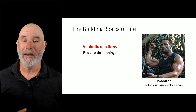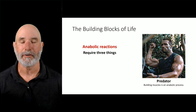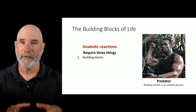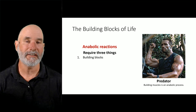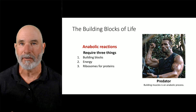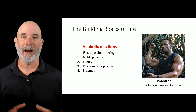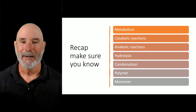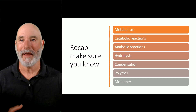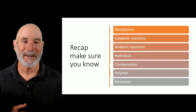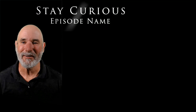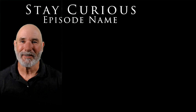You may have heard of anabolic steroids, because they help build lots of muscle. To build muscle, you need amino acids as building blocks and you also need energy. If you're going to make proteins, you make them inside a ribosome, and to build other types of molecules, you need enzymes to help facilitate those chemical reactions. Make sure you understand metabolism, catabolic reactions, anabolic reactions, hydrolysis, condensation, polymer, and monomers. Until next time, stay curious — we'll continue with some lectures on carbohydrates.